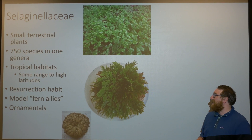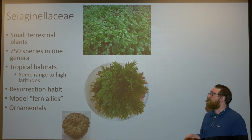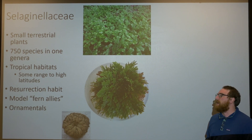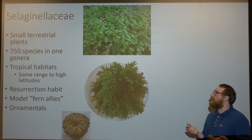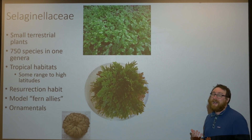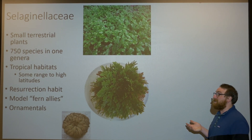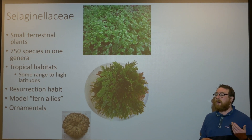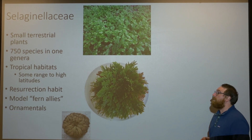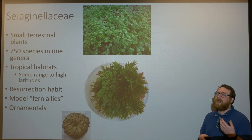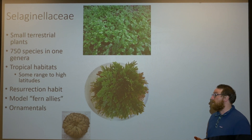The Selaginellaceae is another really big group, with about 750 species all placed in one genus, so we probably need to do some dividing up of that group. These are very small terrestrial plants — a lot of times they're mistaken for bryophytes, but they're not really closely related to bryophytes at all; they're more closely related to true ferns. One big taxonomic problem is that they're pretty much a tropical group, although there are representatives as far north as the Arctic Circle. A lot of them grow as epiphytes on trees, which has made them inaccessible to scientists trying to name and discover new species.